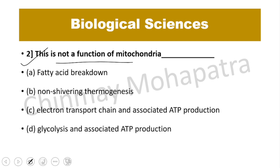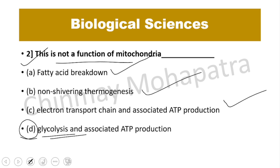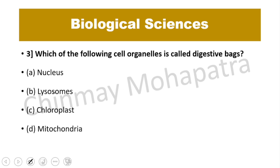Question number 2: Which of the following is not a function of mitochondria? Mitochondria perform fatty acid oxidation, non-shivering thermogenesis, and the electron transport system (ETS) associated with ATP production. However, glycolysis occurs in the cytoplasm, whereas the Krebs cycle occurs in the mitochondria. So D — glycolysis — is the right answer.